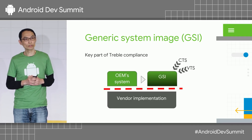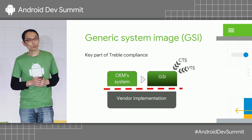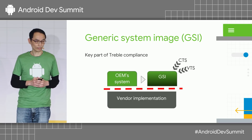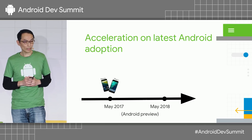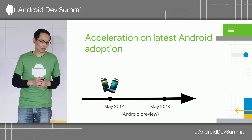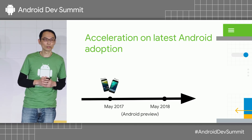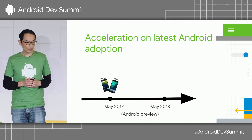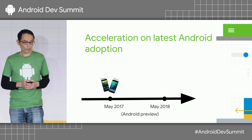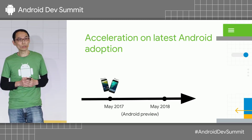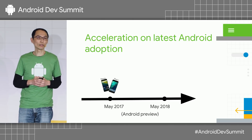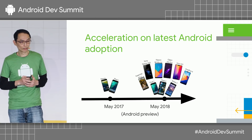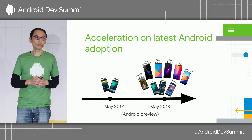With all these powerful tools in place, about a year ago we started to see the momentum of faster Android Pie adoption this year. Looking at the Android beta program at Google I/O last year, only Nexus and Pixel phones were available for you to try out Android Oreo. Fast-forward one year later at Google I/O this year, it was the first time ever that we had non-Google phones join the beta lineup — not one, not two, but seven device makers joining us.